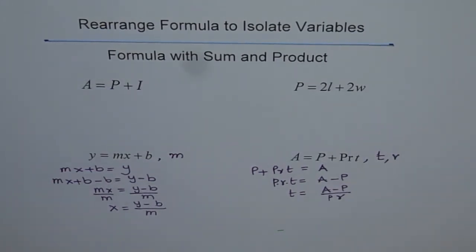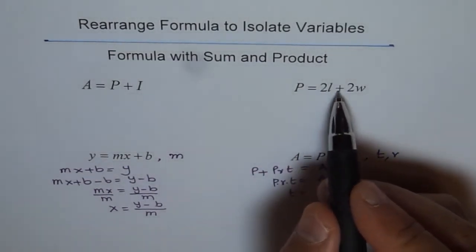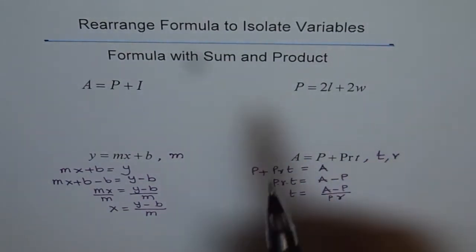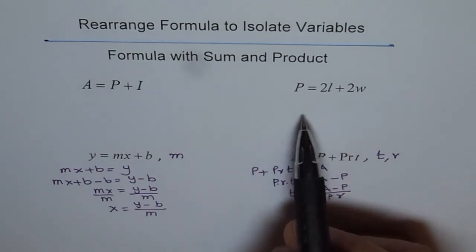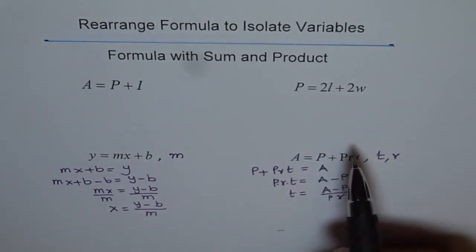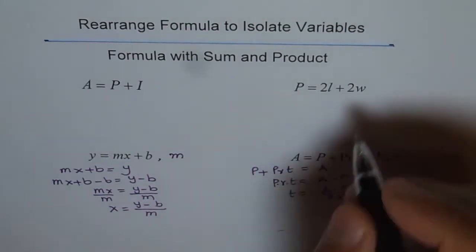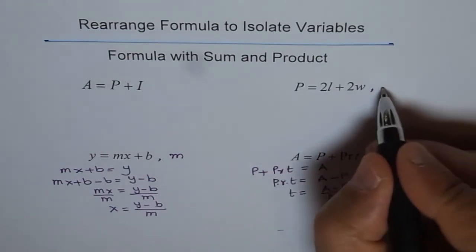Now, let me do one more for you. I will do this. Perimeter equals to twice length plus twice width. Remember, always I am trying to write this on the left side and then figure it out. But, it doesn't really matter. You can keep it on the right side and also do it. So, let's do it this way, keeping it on the right side. Let's isolate for length L.